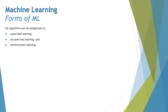As part of the forms of machine learning, we have three forms of machine learning algorithms, which can be categorized as supervised learning, unsupervised learning, and reinforcement learning. Let's understand in a deeper dive what exactly these three categories are and how we can categorize machine learning algorithms into them.